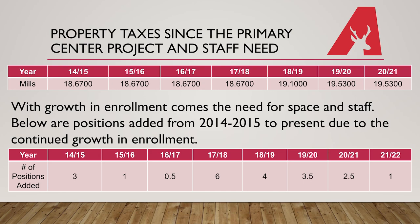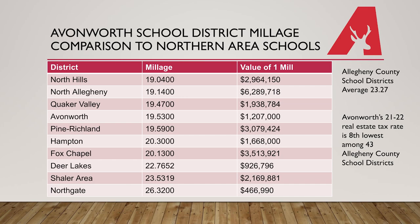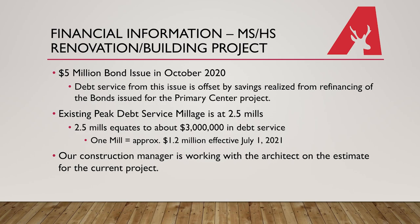The chart at the bottom of this slide shows the staff that has been added from 2014 to today. This slide illustrates where Avonworth's millage stands in comparison to the northern area school districts. Our millage is the 4th lowest at 19.53. The average millage for Allegheny County school districts is 23.27. Avonworth's real estate tax rate is 8th lowest among the 43 Allegheny County school districts. To move forward on the next phase of our facility planning, the district had a $5 million bond issued in October of 2021. However, the debt service from this bond was offset by the savings realized from the refinancing of the bonds from the primary center project. Our current peak debt service millage is about 2.5 mils, which equates to $3 million in our school district budget. The district's construction manager and architect are currently working on the estimate for the upcoming project and more information will be coming soon.